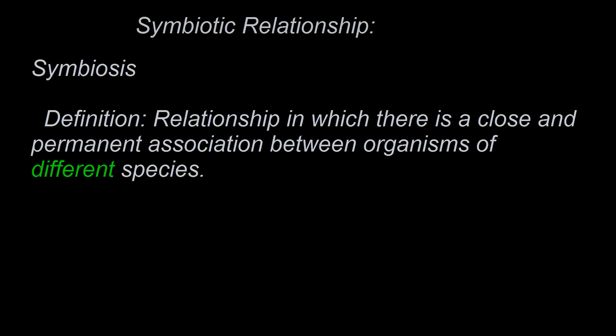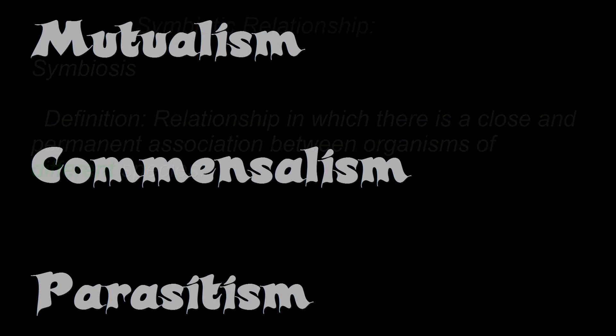We're going to be taking a look at three different types of symbiotic relationships: mutualism, commensalism, and parasitism. Let's go outside and take a look around at what might be in your own backyard or in your own home to represent mutualism, commensalism, or parasitism.